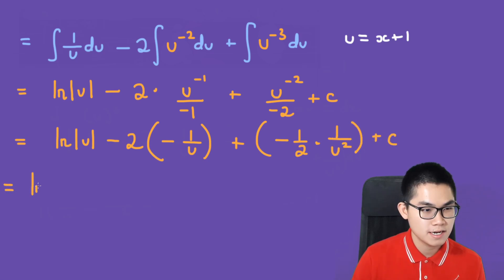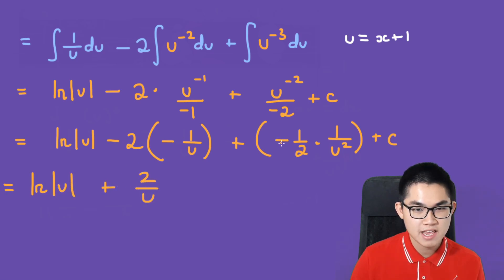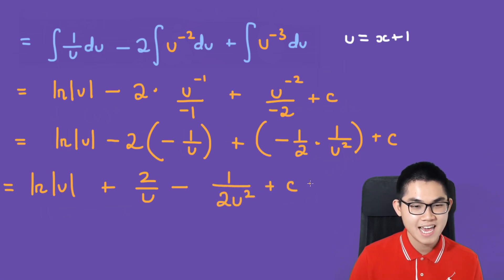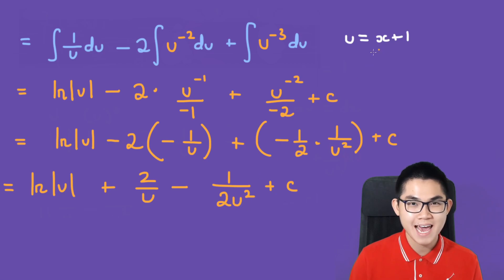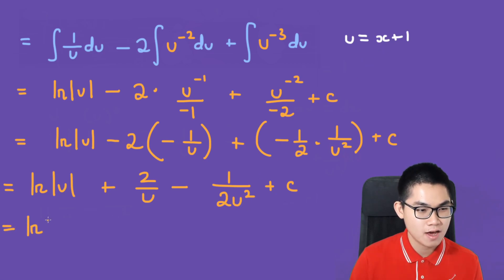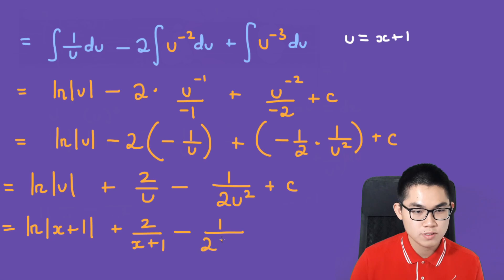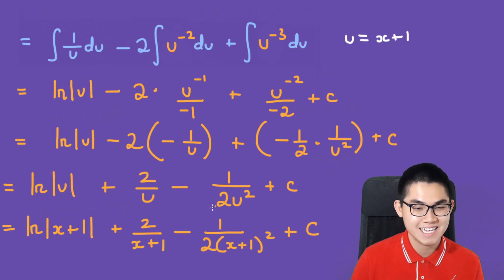Simplifying, this becomes ln|u| plus 2/u minus 1/(2u²) plus C. The final step is to substitute u back with x plus 1, giving us: ln|x plus 1| plus 2/(x plus 1) minus 1 over 2(x plus 1)² plus C.